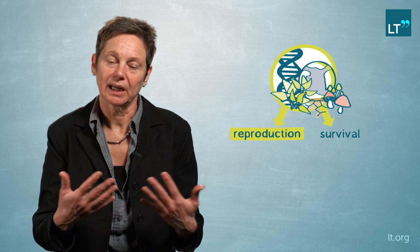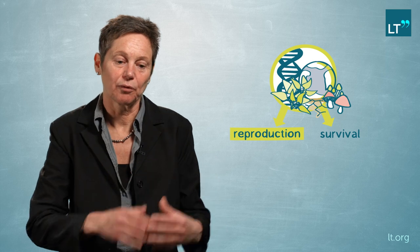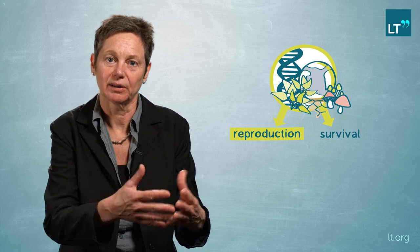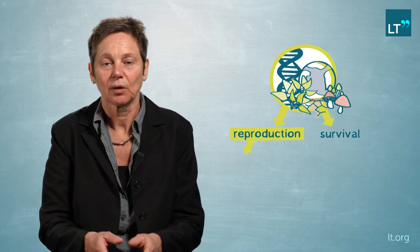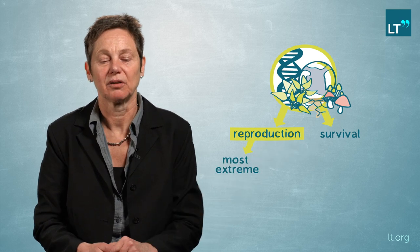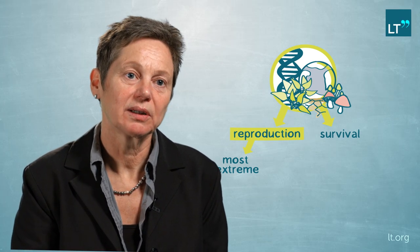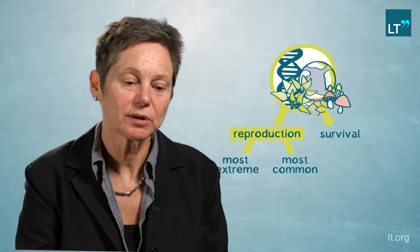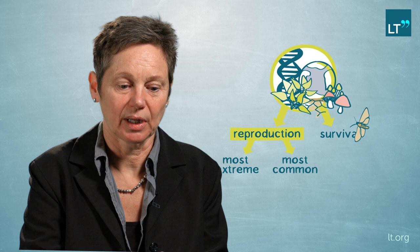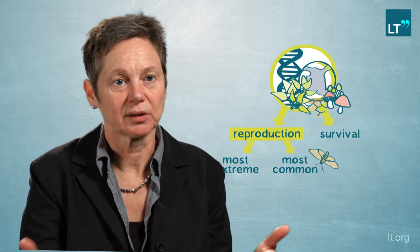In many species, like in birds, mate choice happens for those mates that are the most beautiful or have the most elaborate or longest tails — the most extreme variants. But there are many species, including moths, where attraction happens to the most common individuals. Those individuals that exhibit the most common signal of the species are selected for, and the ones that deviate away from the mean are selected against.